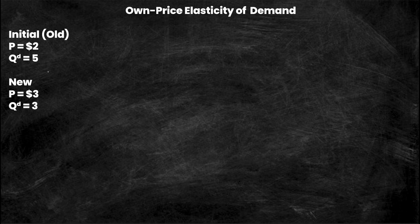The first thing we can look at is that as price increases from two dollars to three dollars, quantity demanded will decrease. We know this because the law of demand says that as price increases, quantity demanded will decrease. So now we're going to actually calculate the algebra behind this.